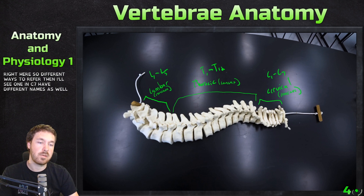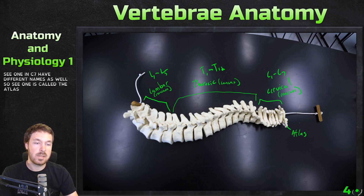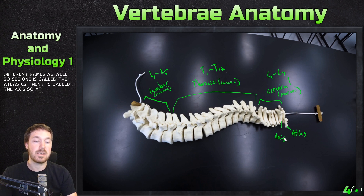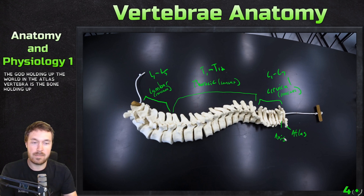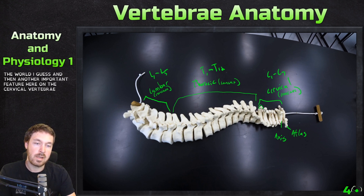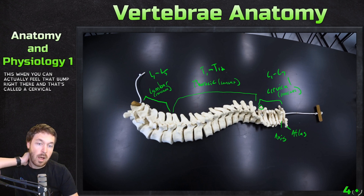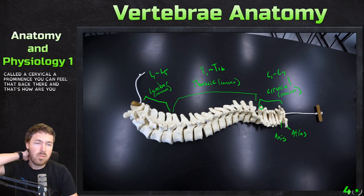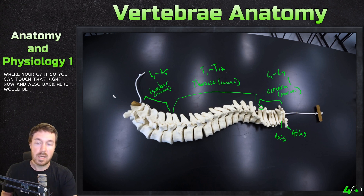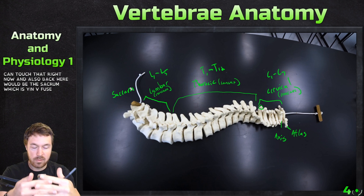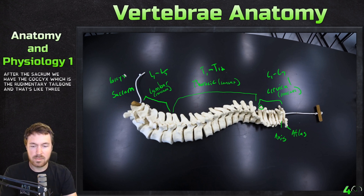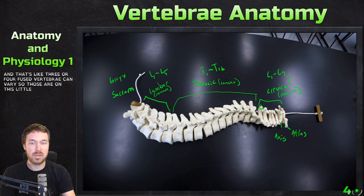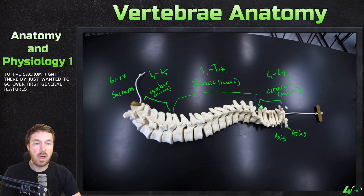Now C1 and C2 have special names as well. C1 is called the atlas, and C2 is called the axis. The atlas is the bone holding up your skull — like the god holding up the world. Another important feature on the cervical vertebrae: you can actually feel that bump there — that's called the cervical prominence, and that's how you know where your C7 is. Back here would be the sacrum, which is five fused vertebrae together. Then after the sacrum we have the coccyx, which is the rudimentary tailbone — three or four fused vertebrae — and typically the coccyx is just fused to the sacrum.